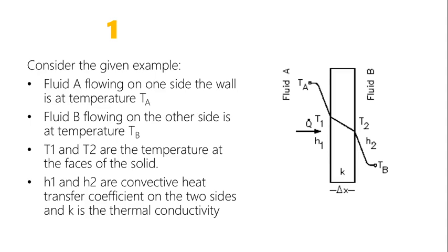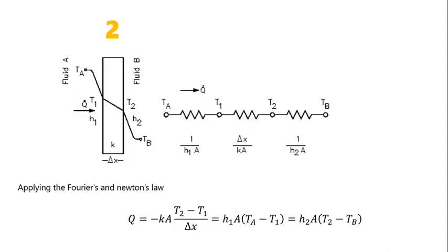Assuming H1 and H2 are the heat transfer coefficients on both sides and K is the thermal conductivity of the wall material, we apply both Fourier's Law and Newton's Law. For the two fluid sides, Newton's Law applies, and for the wall thickness, Fourier's Law applies.